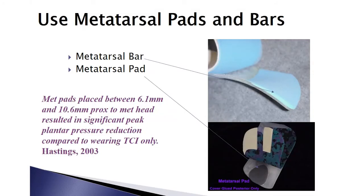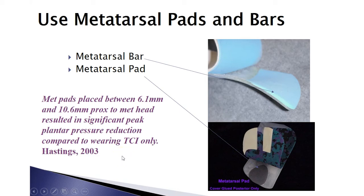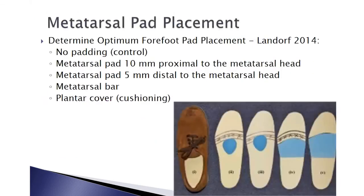The next modification is metatarsal bars — a piece of poron placed on top of the orthosis, full thickness distally and beveled proximally — or a metatarsal pad. Hastings found that metatarsal pads placed between 6.1 and 10.6 millimeters proximal to the metatarsal head resulted in significant peak plantar pressure reduction compared to wearing a total contact insert only. So while the total contact insert was effective, using it with a well-placed metatarsal pad was even more effective.